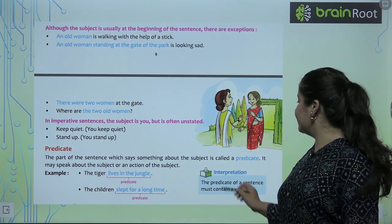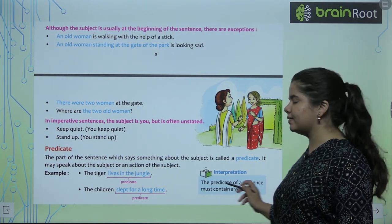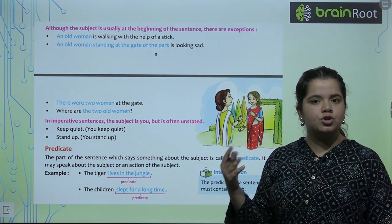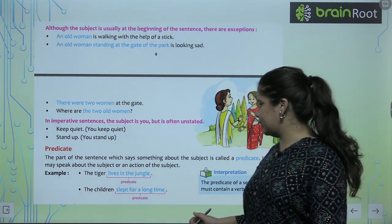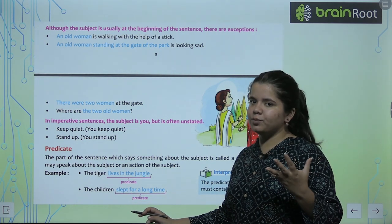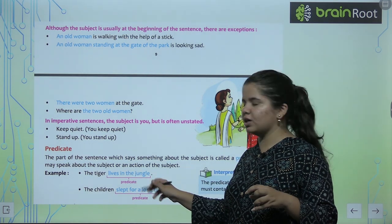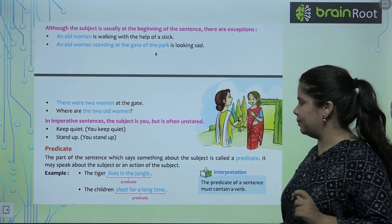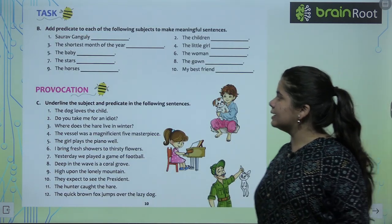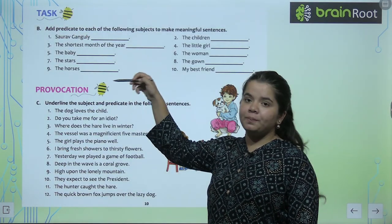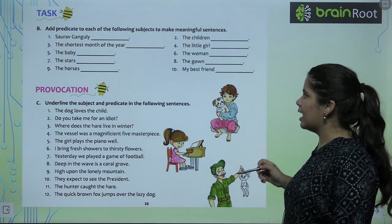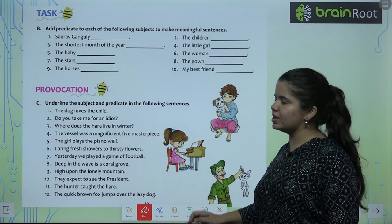You should remember one thing: the predicate of a sentence must contain a verb. Verbs are doing words. 'Slept' is a verb. 'Lives in the jungle' — 'lives' is a verb. So, in the predicate there will always be a verb. In Exercise B, we have to add predicates, just as in Exercise A we added subjects.